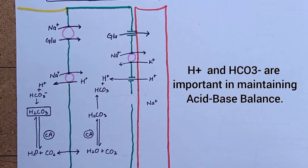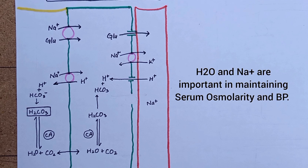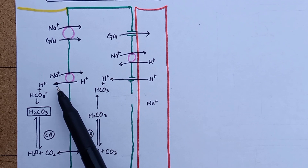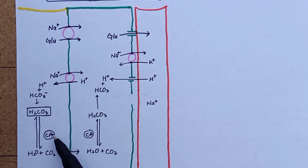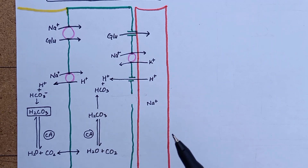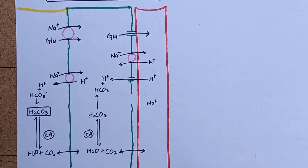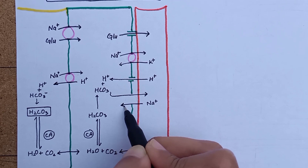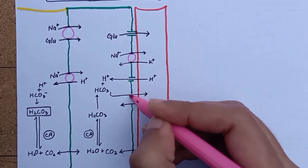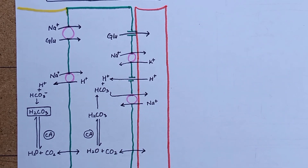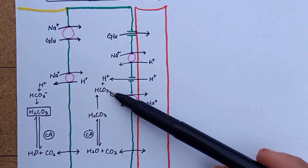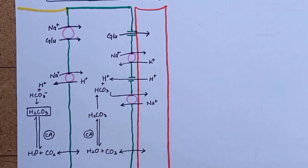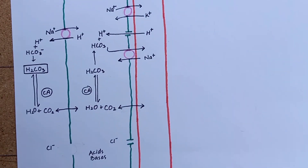Hydrogen and bicarbonate are important in maintaining acid-base balance of the body, while water and sodium are important in maintaining serum osmolarity and blood pressure. Hydrogen combines with bicarbonate to form carbonic acid, which then dissociates via the enzyme carbonic anhydrase into water and carbon dioxide. The same reaction takes place inside the cell in reverse. Since carbon dioxide is a gas that passively diffuses across membranes, high CO2 levels cause more hydrogen ion production and hence more acidity. Bicarbonate ion is reabsorbed into the blood via co-transport with sodium, making bicarbonate reabsorption in the proximal tubule sodium-dependent. This step is especially important in conditions like high-altitude sickness, where respiratory acidosis results from high levels of carbon dioxide in the blood.